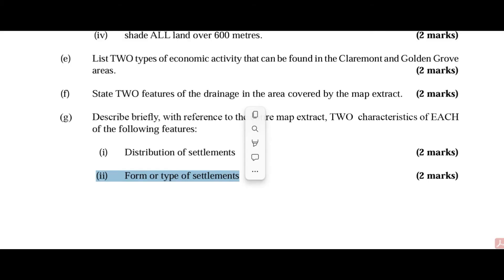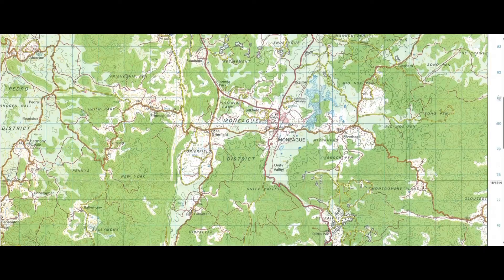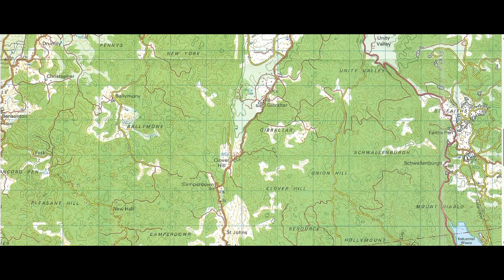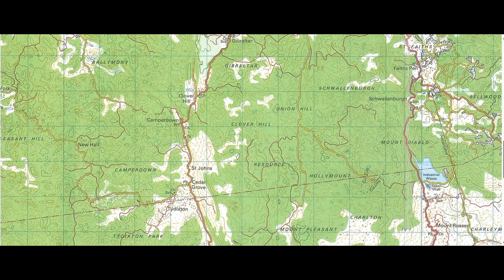With respect to the form or type of settlement: first, nucleated or congested settlement patterns exist in areas such as Claremont, Golden Grove, and Walker's Wood. Secondly, linear settlement patterns exist in the southern region alongside roadways, within the vicinity of Cedar Grove and Clover Hill. While scattered or dispersed settlement patterns exist south of Charlton.